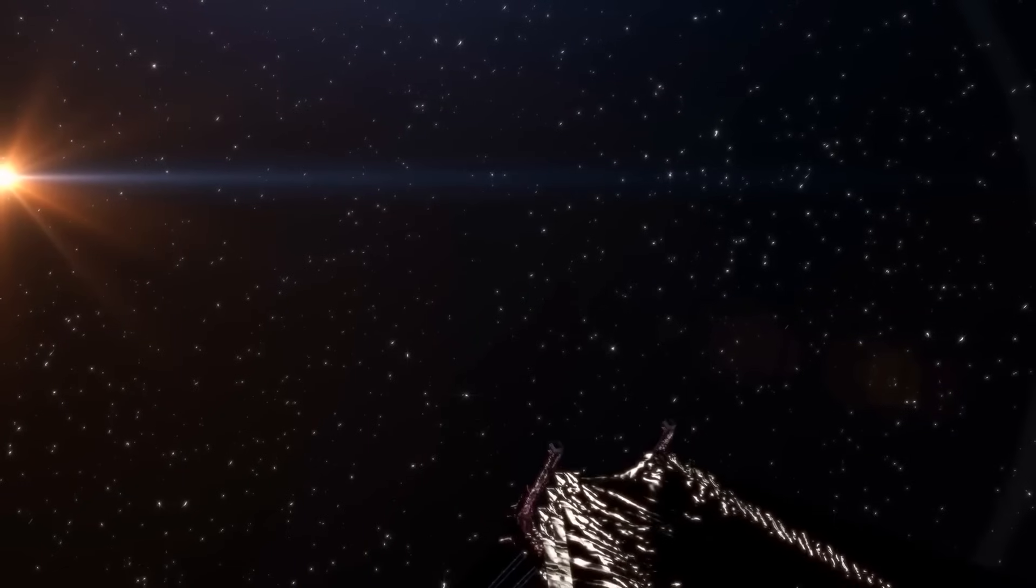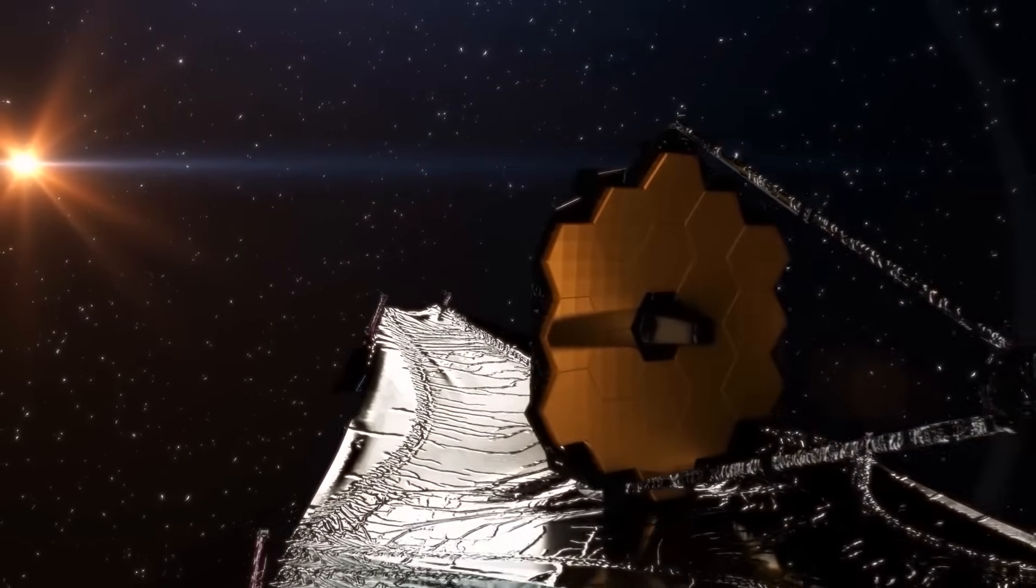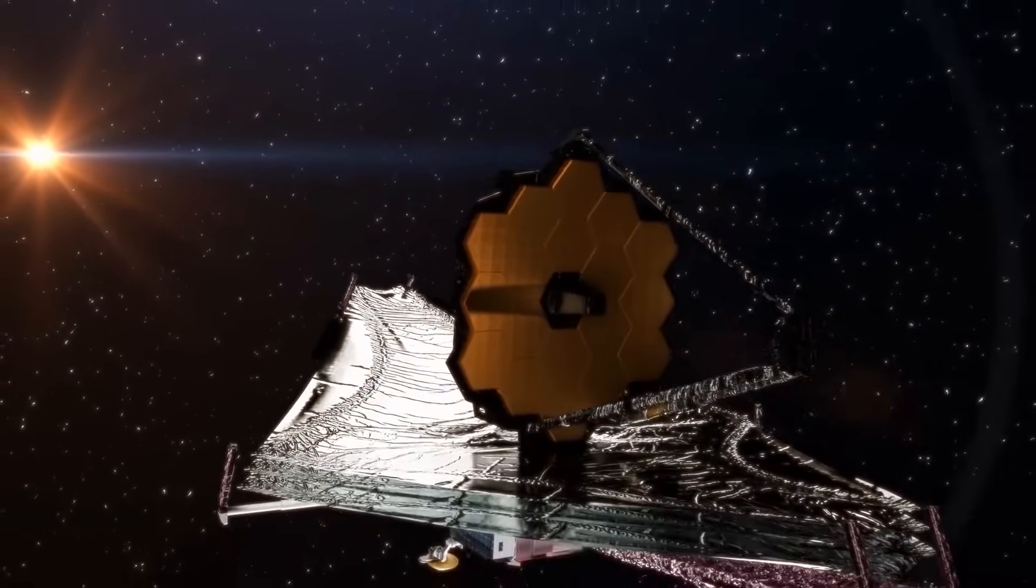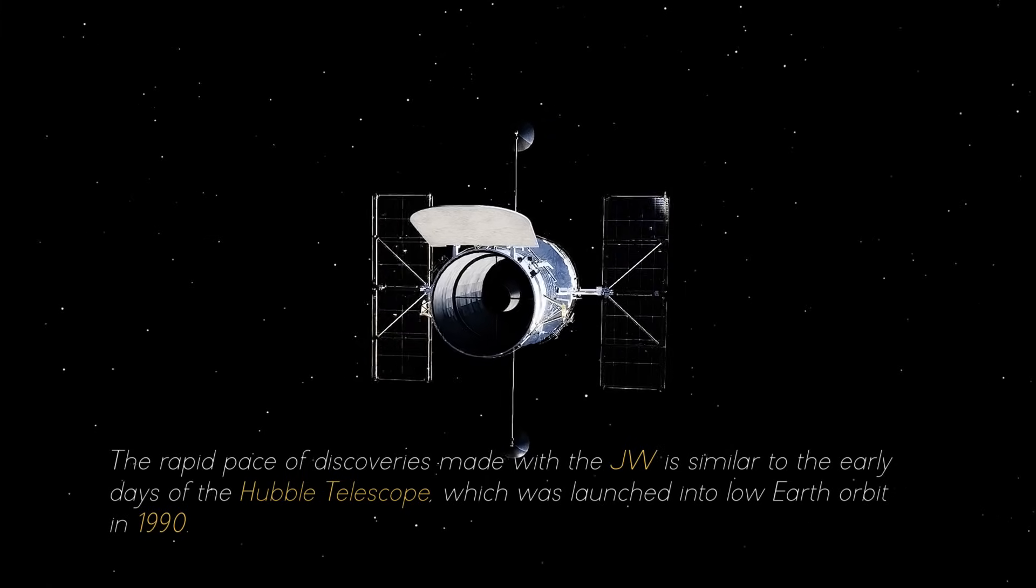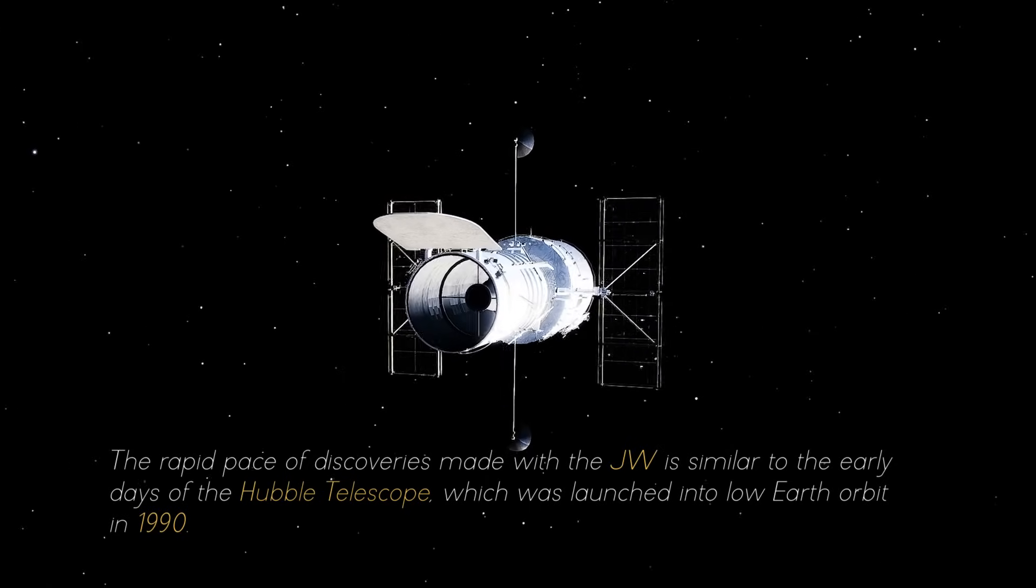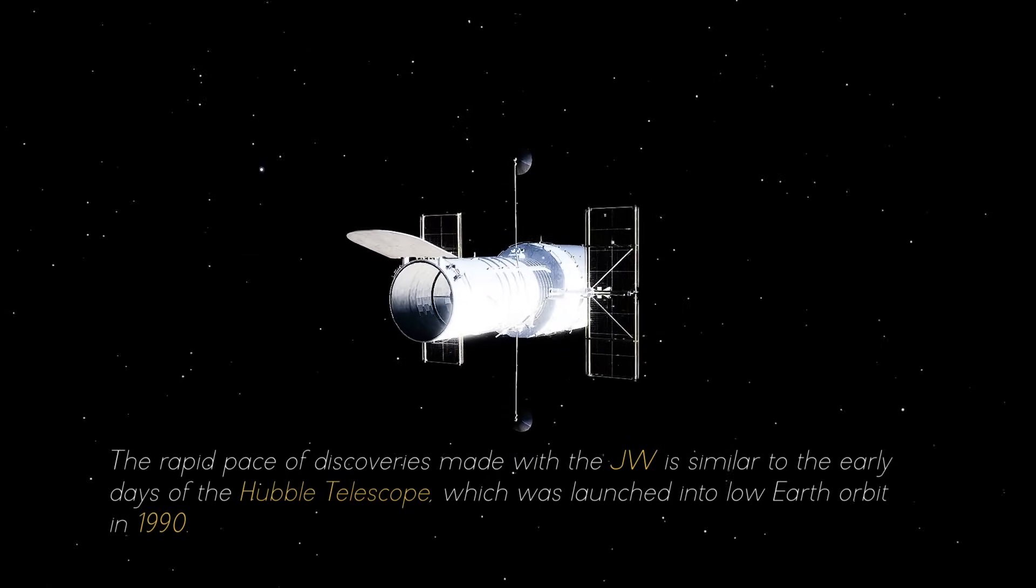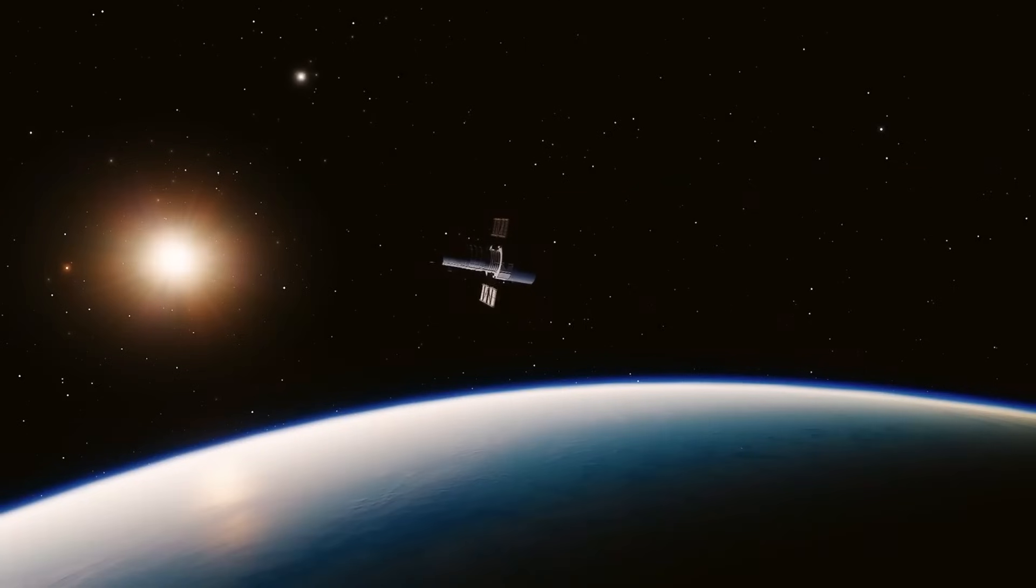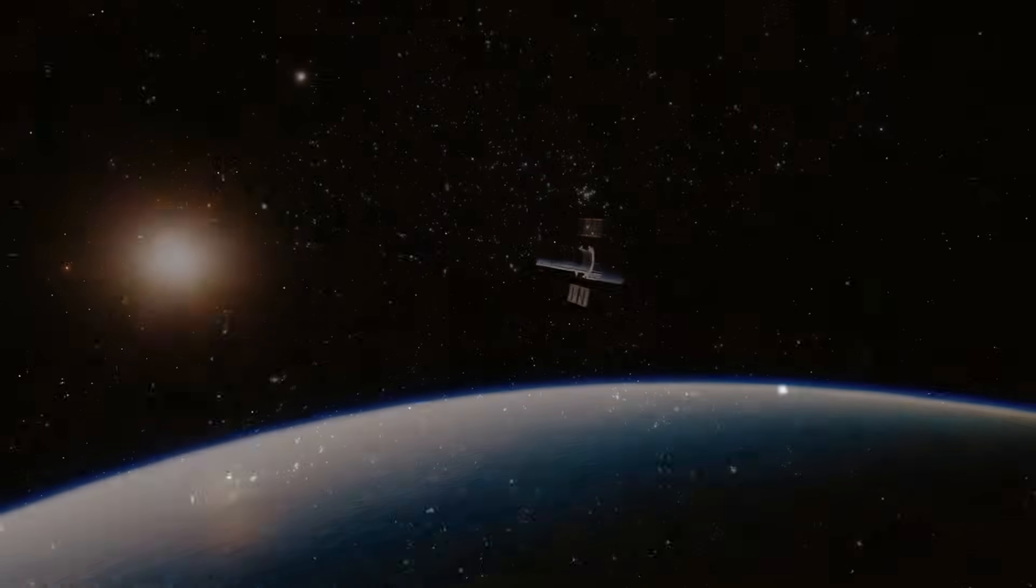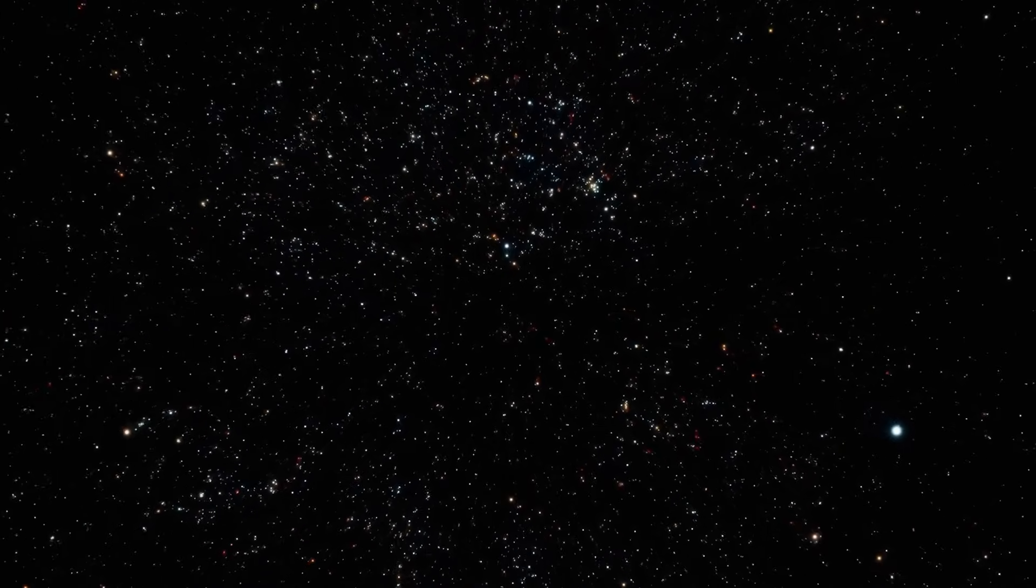In the meantime, preliminary observations offer persuasive insight into how the JWST could ultimately rewrite our understanding of the universe. The rapid pace of discoveries made by the JWST is similar to the early days of the Hubble telescope, which was launched into low Earth orbit in 1990. The Hubble Space Telescope quickly began to provide a much more complex picture of the early universe than researchers had initially anticipated.